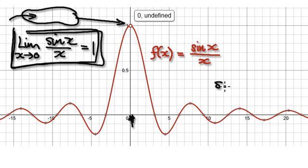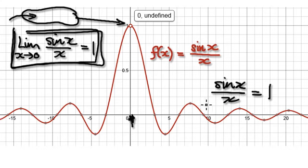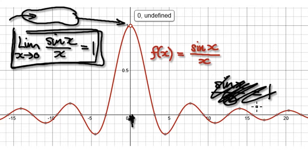So we cannot say sin(x)/x equals one. We cannot say this because at x equals zero you're going to have something over zero. You cannot say this, but you can make the limit statement.